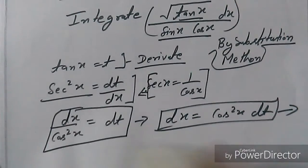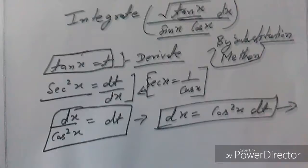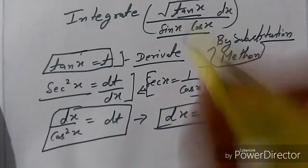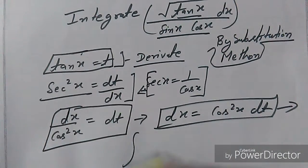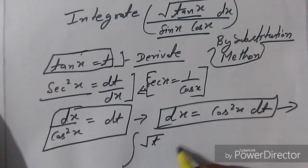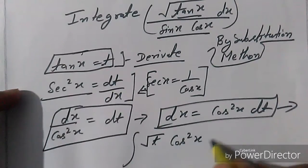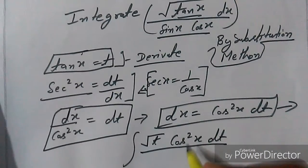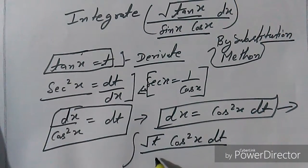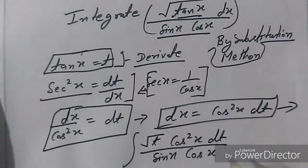Now we put tangent x as t and substitute dx with cos²(x) dt. The integral becomes t and root, with dx replaced by cos²(x) dt, all divided by sin(x) cos(x).